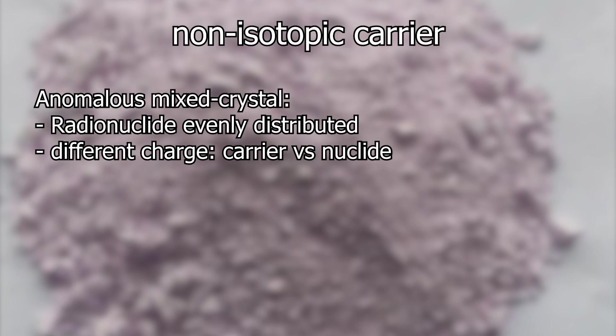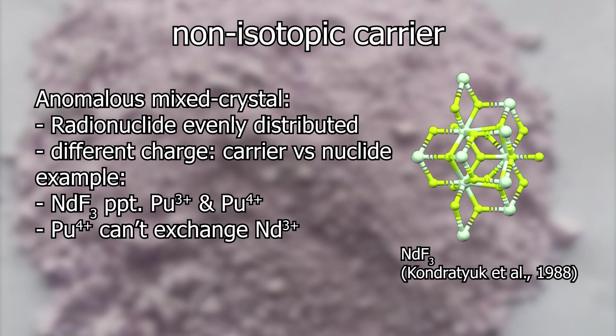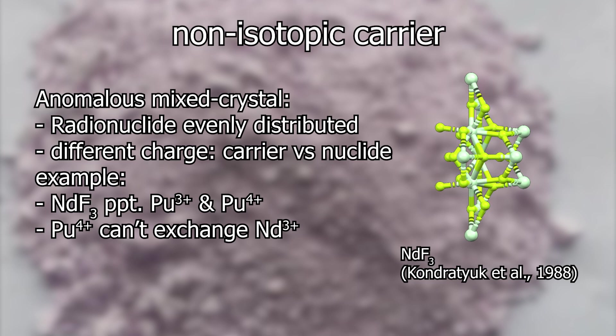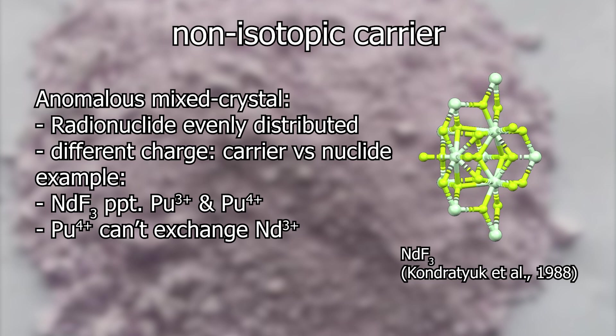The precipitated radium nuclide does not always have to exchange places for the carrier element in the precipitate. In this case, we have a non-isomorphic exchange that leads to an anomalous solid solution precipitate. Plutonium-4+, for example, can be precipitated out by using neodymium trifluoride, although in this case plutonium-4-plus ions cannot exchange places for the neodymium-3-plus ions.